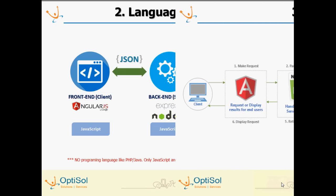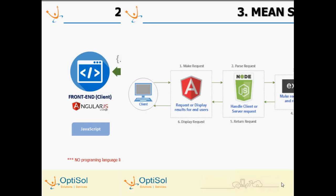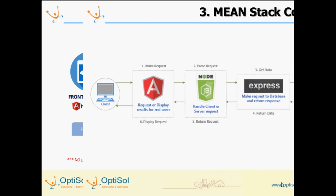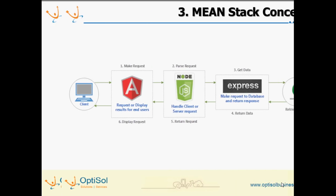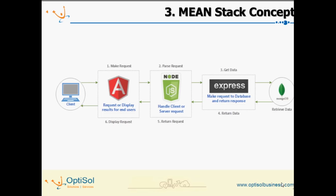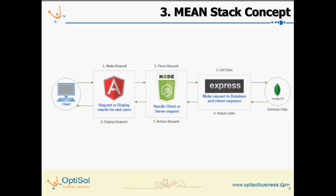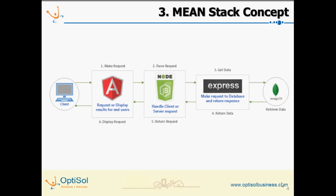This diagram illustrates the request and response flow between the client, server, and DB tier. As you can see, the JSON-based flow between different tiers is programmed using JS. AngularJS provides a thin client layer and takes care of GET requests and POST responses.